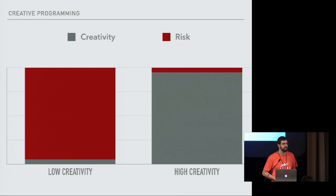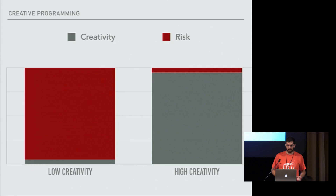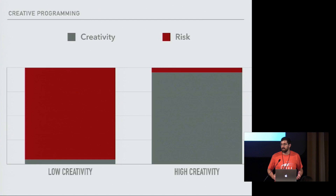Most attempts at creativity fail. This graph is probably the most important thing in the whole talk. It points out the relationship between risk and creativity: when risk is high, creativity is low, and when risk is low, creativity gets high. It's pretty easy to see why we consider the dark ages the dark ages — because innovation was risky. People didn't want to be creative because of the whole death thing.